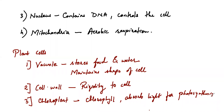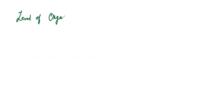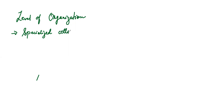How they are arranged leads us to the different levels of organization. There are some specialized cells which will carry out certain functions. Some important specialized cells which you will find in animal as well as plant cells are as follows.